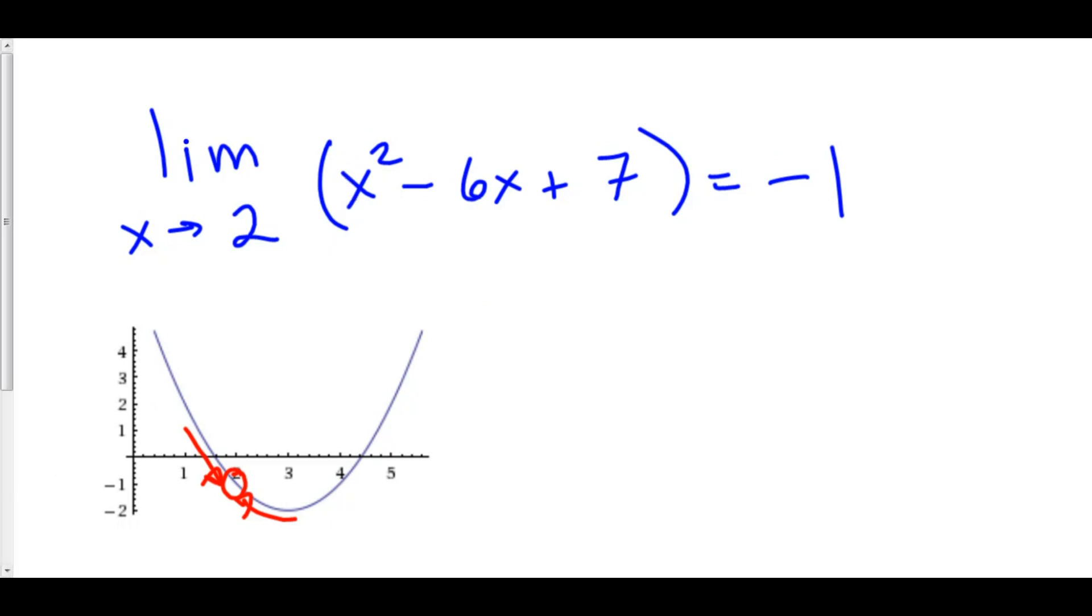Let's take a look at another example. Let's take the limit as theta approaches pi of cosine of theta. Well, cosine theta, there's nothing going on here that will give us any trouble whatsoever. We're not dividing by zero. We're not doing anything irregular.